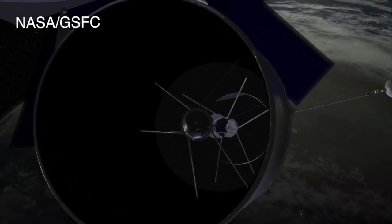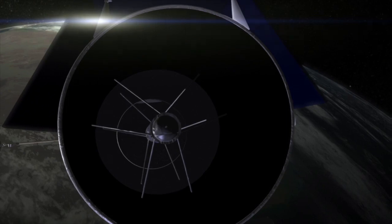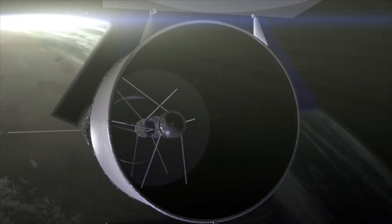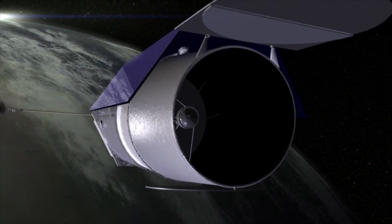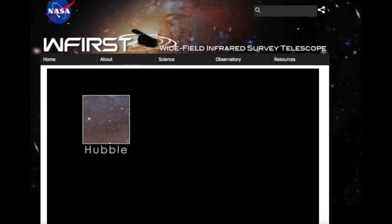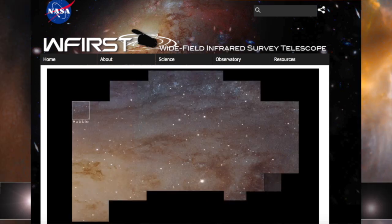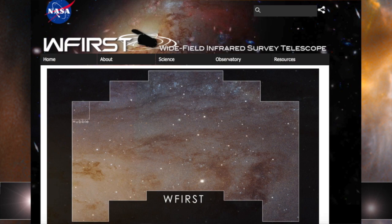WFIRST will use one of two Hubble Space Telescope-like chassis that was given to NASA by the National Reconnaissance Office back in 2012. While it's Hubble-sized and has the same size primary as Hubble, that's where the similarities between WFIRST and Hubble will end. As its name implies, it will be a Wide Field Telescope and see a much larger portion of the sky than Hubble can. Way more.